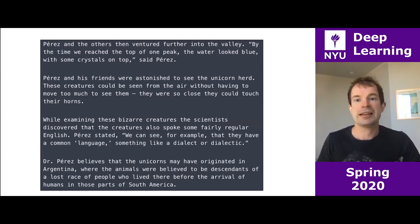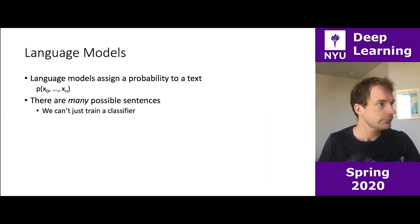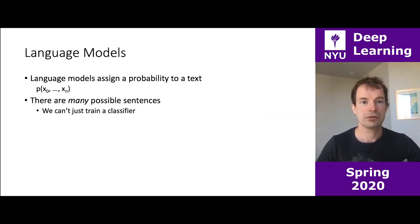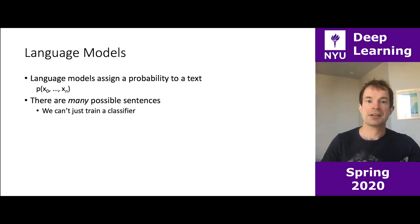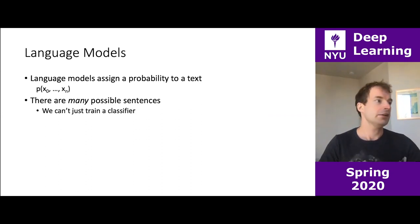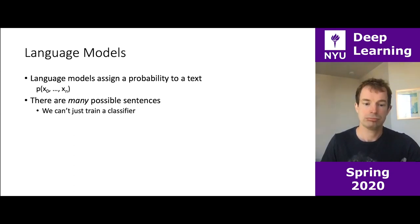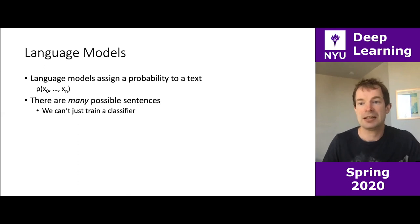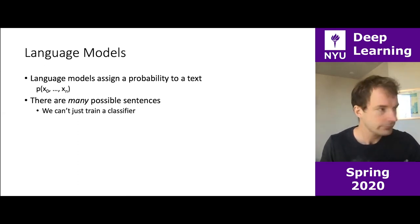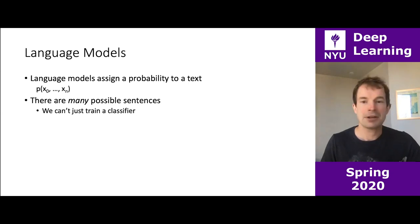I'm going to try and show you the kind of techniques you need to actually build a language model that works this well. Very briefly, what is a language model? A language model is just basically density estimation for text. We're going to assign a probability to every possible string, and hopefully we have a model that puts more probability on strings which are fluent English than other strings. How do we model this density?